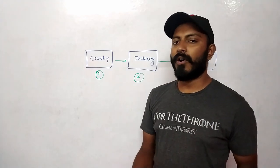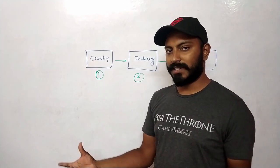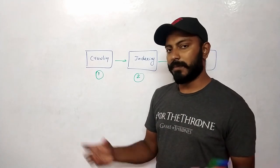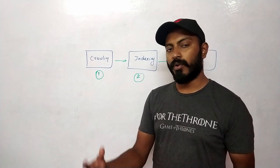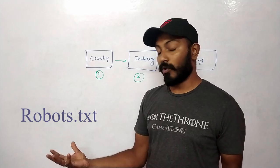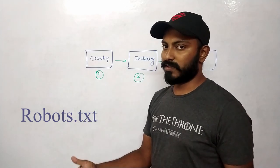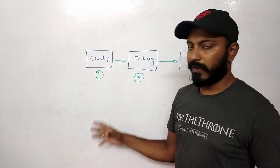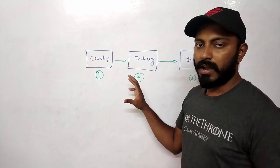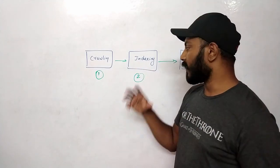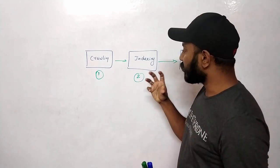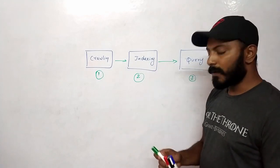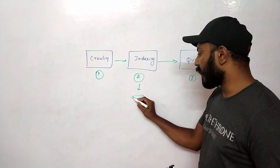Crawling is the process of fetching all the different web pages from across the internet. Google has distributed crawlers — they call it a spider. It's distributed, meaning so many computers are basically crawling over different sites using links provided by robots.txt or links available in the pages. They keep crawling all pages and storing them into persistent storage. Then all these files are fed into the indexer.